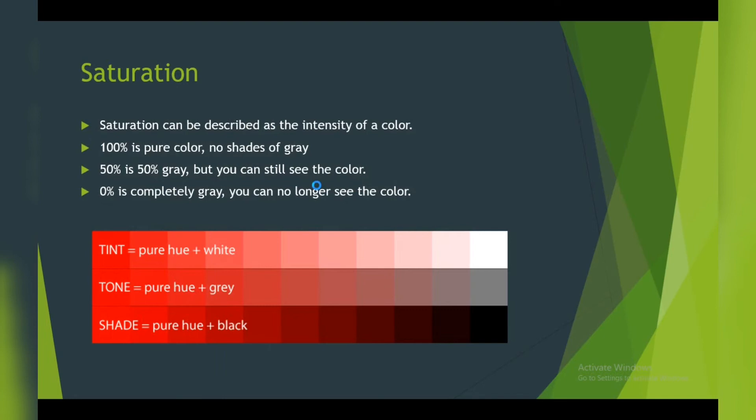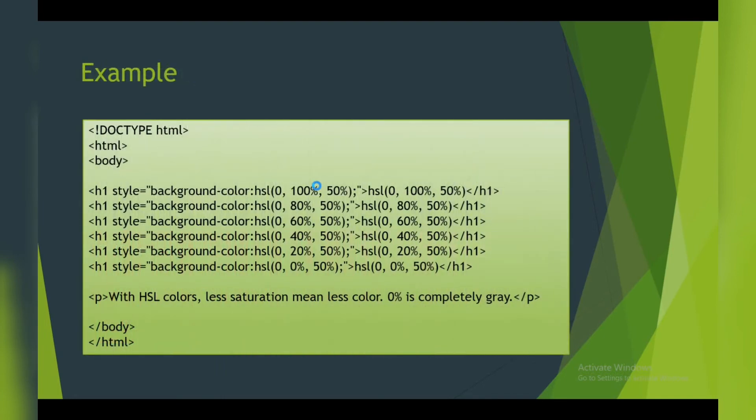Here I have given you a small example for saturation. Hue is adjusted to zero in every element, and lightness is adjusted to 50 percent in every element. Only saturation percent is changing. If you want to try by yourself, you can try or wait for my notepad explanation.